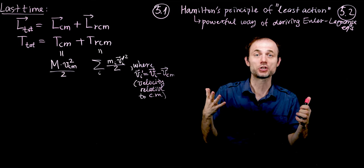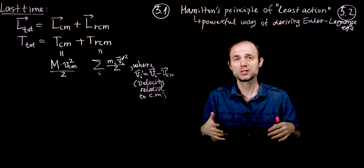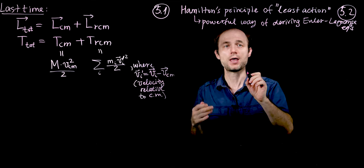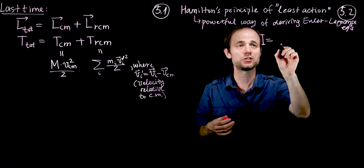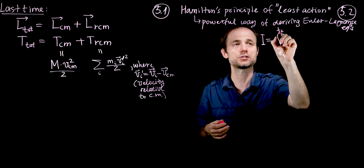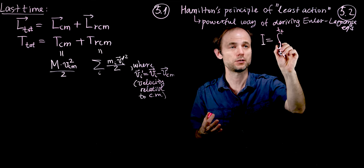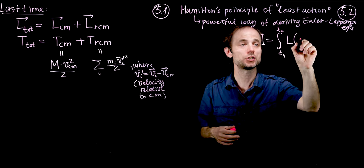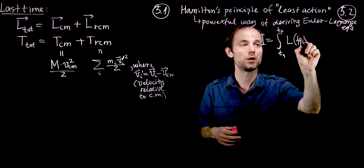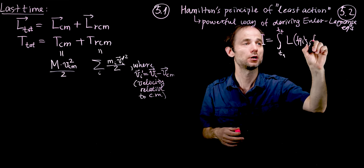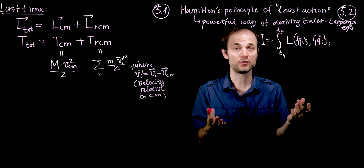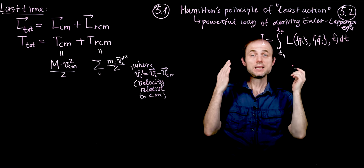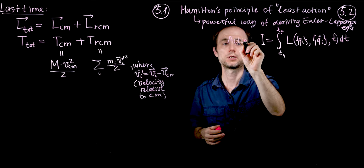Wouldn't it be nice if there was a way to characterize the amount of action? If it's the least action, then we would like to quantify what action is. Let's define action as an integral over a path, starting with t1 and ending with t2 — integrating in time the Lagrangian L, which depends on a bunch of generalized coordinates q_i, their derivatives q̇_i, and time. This integral will be our action.